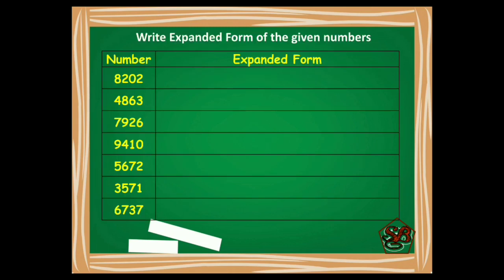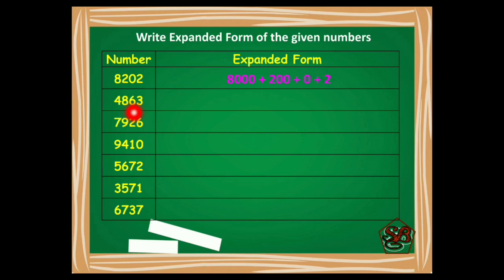Let's do some examples to understand it better. The number given to us is 8202. 8 is at thousands place, 2 is at hundreds place, 0 at tens place and then 2. So we will write it as 8000 plus 200 plus 0 plus 2. Moving on to the next example, 4863 will be written as 4000 plus 800 plus 60 plus 3.